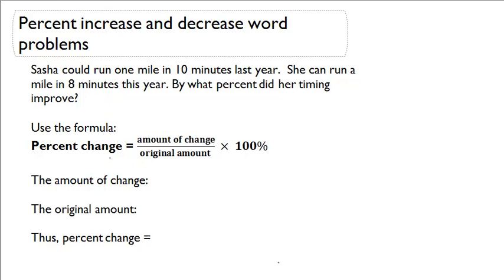The formula that we're going to use is percent change equals the amount of change divided by the original amount times one hundred percent. In order to do this formula we need two things: the amount of change and the original amount.